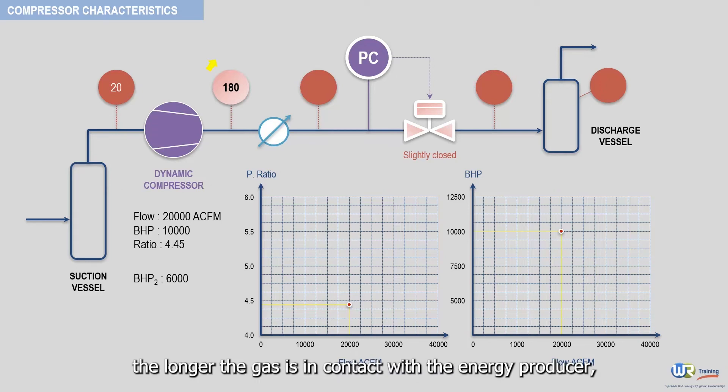Simply stated, the longer the gas is in contact with the energy producer, which is the blades, the higher the pressure ratio for a dynamic compressor. This means the flow rate must decrease.